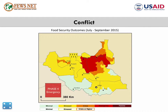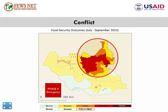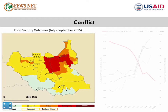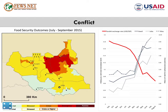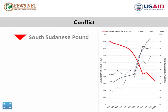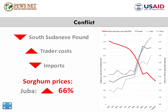In South Sudan, IPC Phase 4 emergency is widespread in Greater Upper Nile Region. Continuing conflict prevented many people from planting and blocked deliveries of humanitarian assistance. In addition, rainfall was below average in the region, unlike other parts of the country which saw average rainfall. Green harvests will be limited and food security will remain severe through at least December.